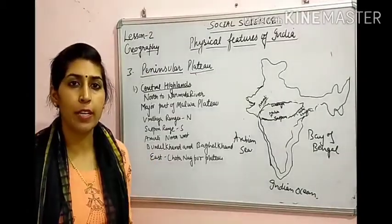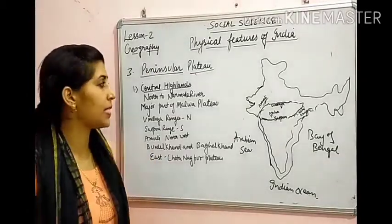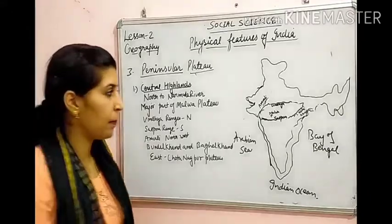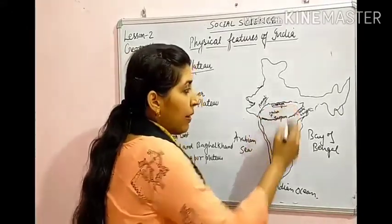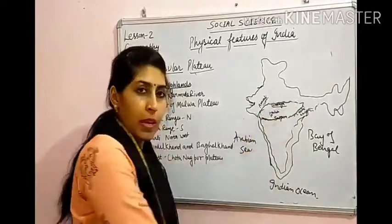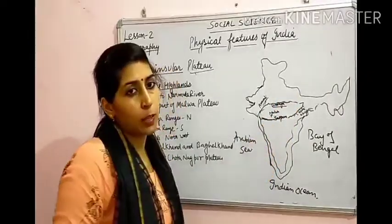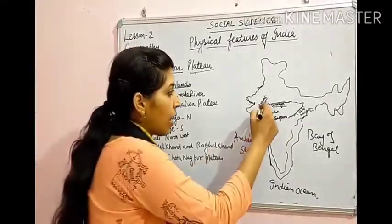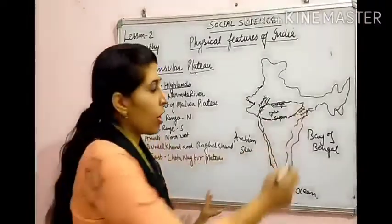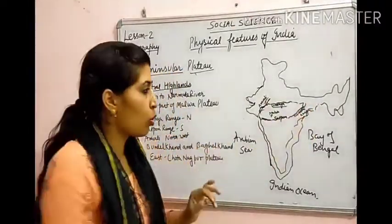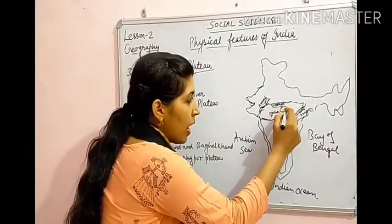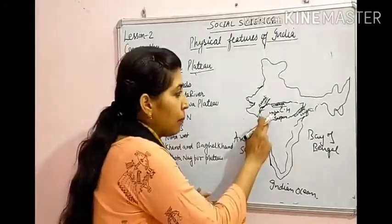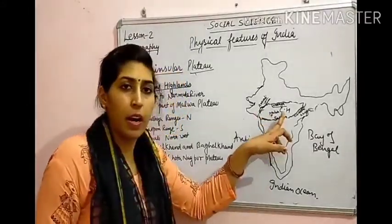The first part is the Central Highland. इसके north में Vindhya ranges हैं, south में Satpura ranges हैं, northwest में Aravalli ranges हैं, और सबसे east में Chota Nagpur Plateau है। This area is the Central Highland. Central Highland में Malwa Plateau का अधिकतर portion आता है — नर्मदा river के north में है Central Highland.